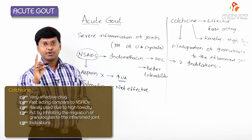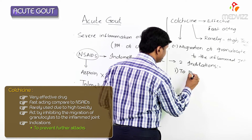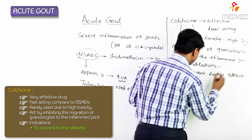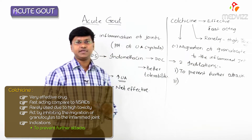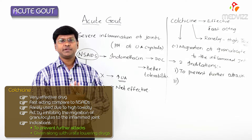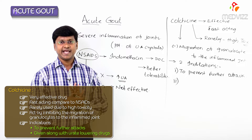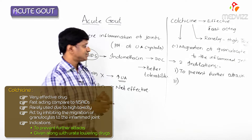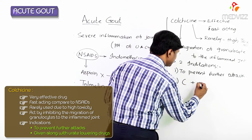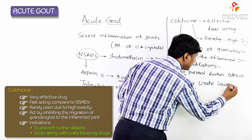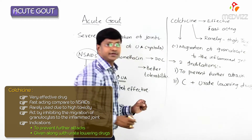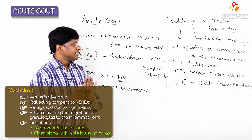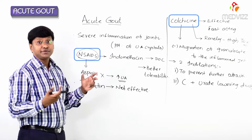There are two indications for daily use of colchicine. Number one: to prevent further attacks. Number two: colchicine should be given along with urate-lowering therapy to suppress the attacks precipitated by abrupt changes in serum uric acid levels.